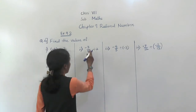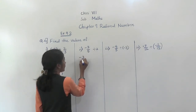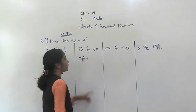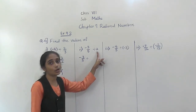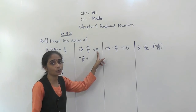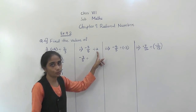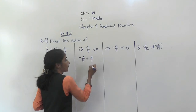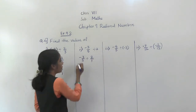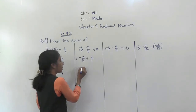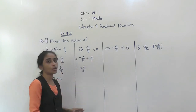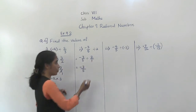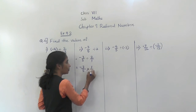Now let us solve the second example: minus 3 upon 5 divided by 2. We have to write the reciprocal of 2. What is the reciprocal of 2? 1 upon 2. Divide by 2 means 2 upon 1 — there is no denominator, means 1. What is the reciprocal of 2 upon 1? 1 upon 2. So write 1 upon 2. We are doing inverse multiplication.